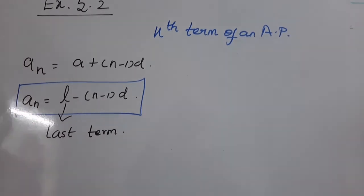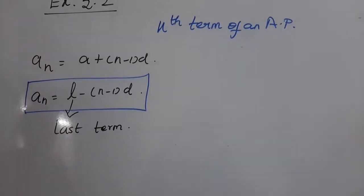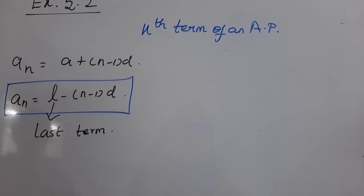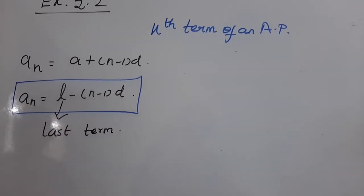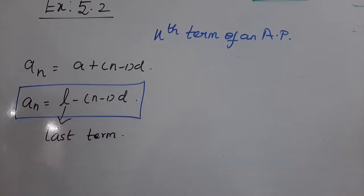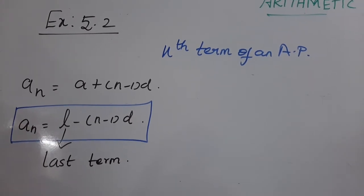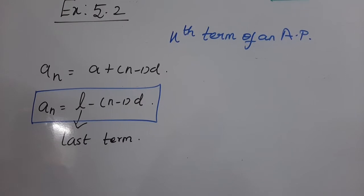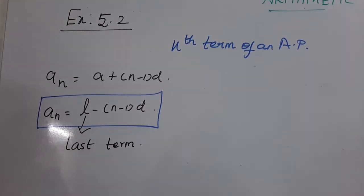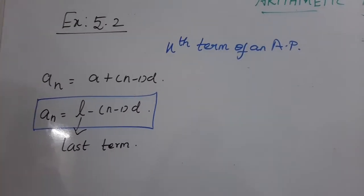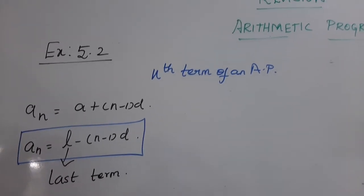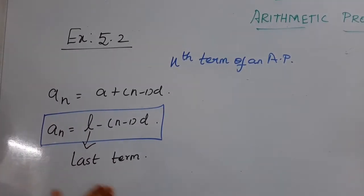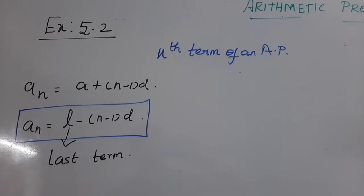In exercise 5.2, there are different types of problems: one is finding AN from the last; one is finding AN from the beginning; one is finding missing terms in the AP; and the last type is checking which term a given number is — for example, finding the position of 75 in the AP.